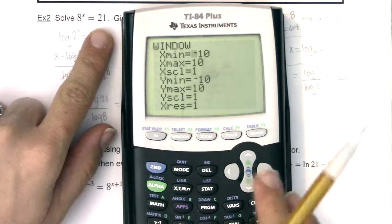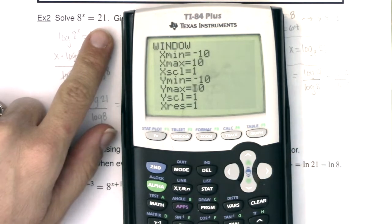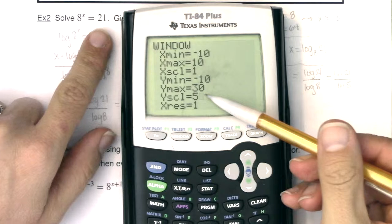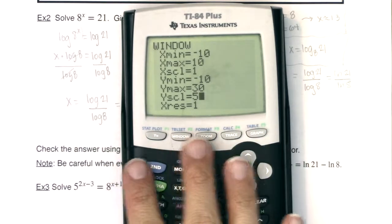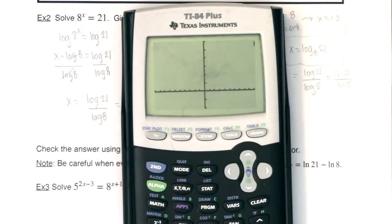But my second equation here was 21. So I'm going to adjust my window. I'm going to make this go, I'll have it go up to 30. And then I'll scale it by fives. You don't have to change the y scale. I just don't want 30 tick marks on my axis. I'll just have them make a tick mark every five units. As soon as you adjust your window, make sure you hit graph.